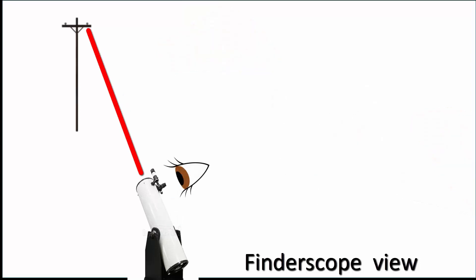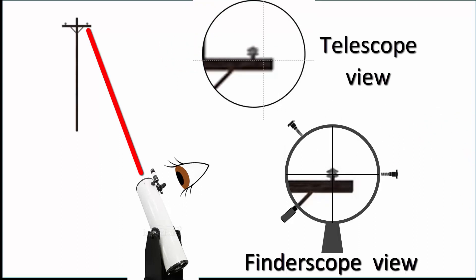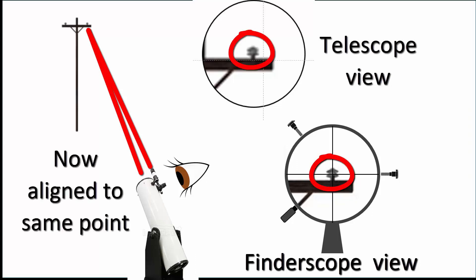Now look through the telescope eyepiece again and make sure both the main telescope and the finder scope crosshairs are pointing at precisely the same target point. Adjust the finder scope screws again if necessary.